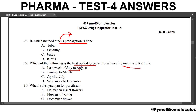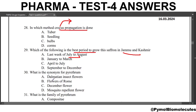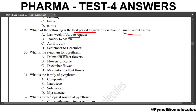What is the synonym for pyrethrum? The answer is Dalmatian insect flowers. What is the family of pyrethrum? Compositae is the family of pyrethrum. Lauraceae is for cinnamon. Solanaceae is for Solanum khasianum. And Myristicaceae is for nutmeg.